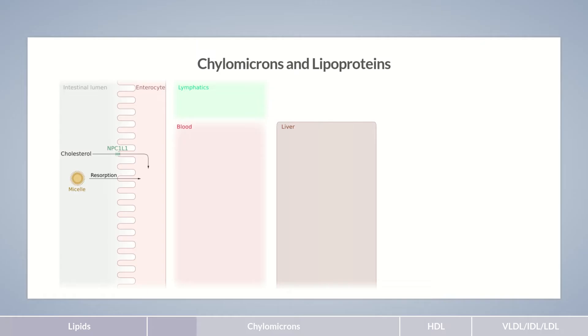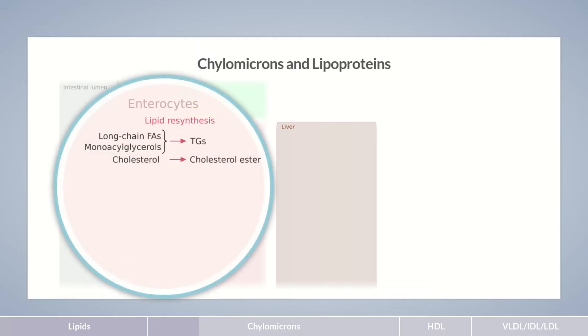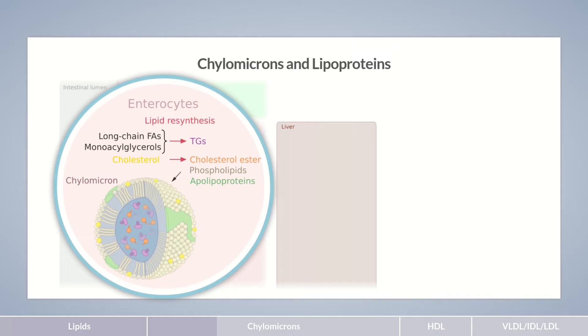In the cytosol of the enterocytes, lipid resynthesis occurs, during which triglycerides and cholesterol esters form. Together with phospholipids and apolipoproteins, they form aggregates. The polar components of phospholipids, cholesterol, and apolipoproteins are directed outwards, forming a shell around the completely nonpolar lipids in the core. These newly formed complexes are termed chylomicrons and are lipoproteins.